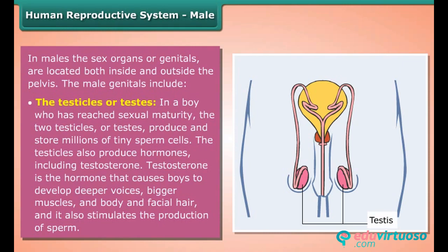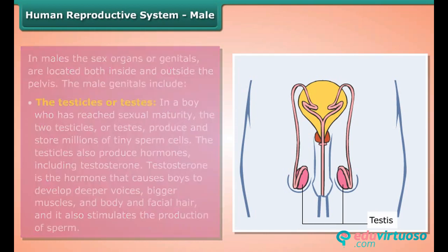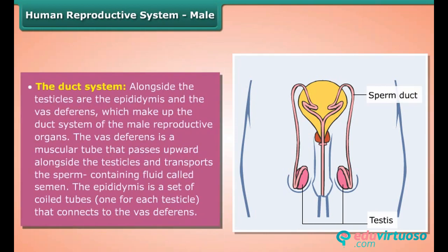Testosterone also stimulates the production of sperm. The duct system alongside the testicles includes the epididymis and the vas deferens, which make up the duct system of the male reproductive organs. The vas deferens is a muscular tube that passes upward alongside the testicles and transports the sperm-containing fluid called semen.